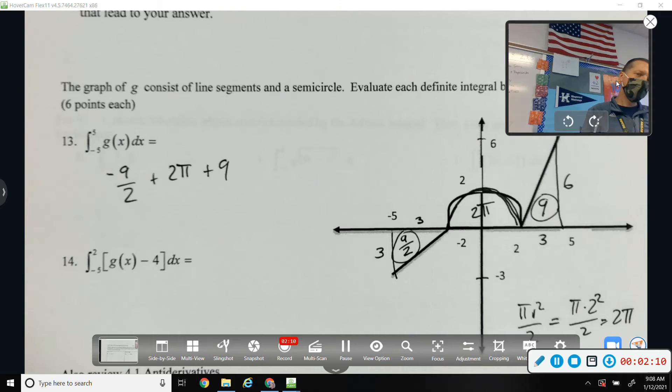Student asks: It's negative 9 halves because it's underneath the x-axis? Correct. If it was above, it would be positive? Right.